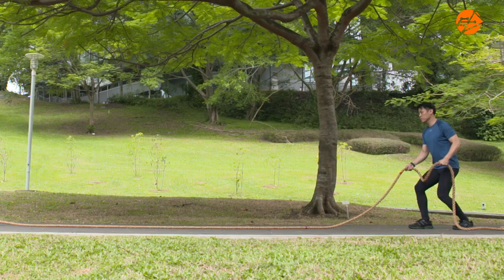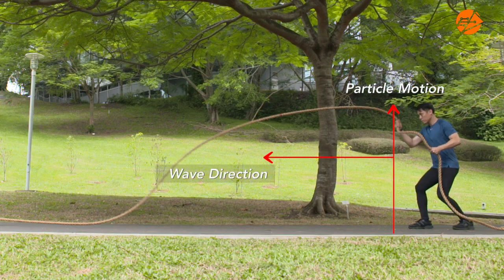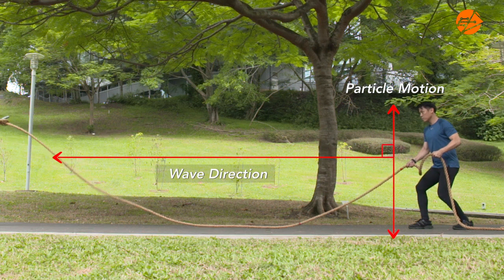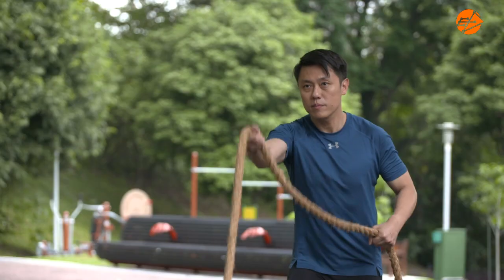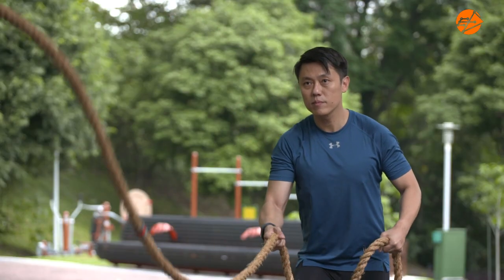To sum up, a transverse wave is formed by a vibrating force that generates a periodic motion for all the particles in the wave. It is important to remember that each particle vibrates perpendicularly to the direction of wave motion, and it does not move along the wave. As a result, there is only energy transfer and no mass transfer.